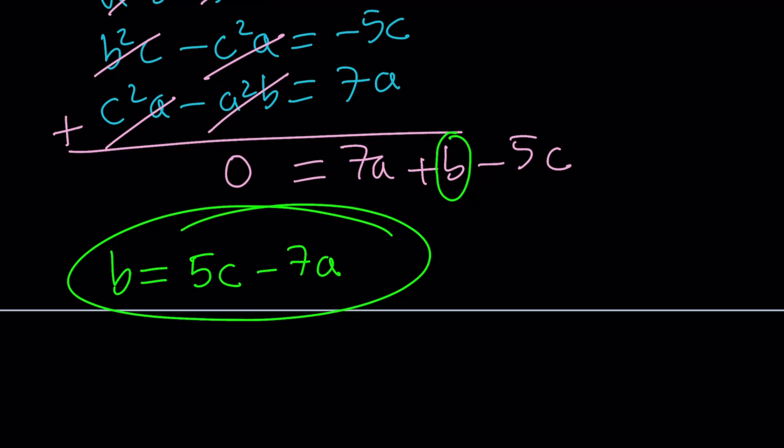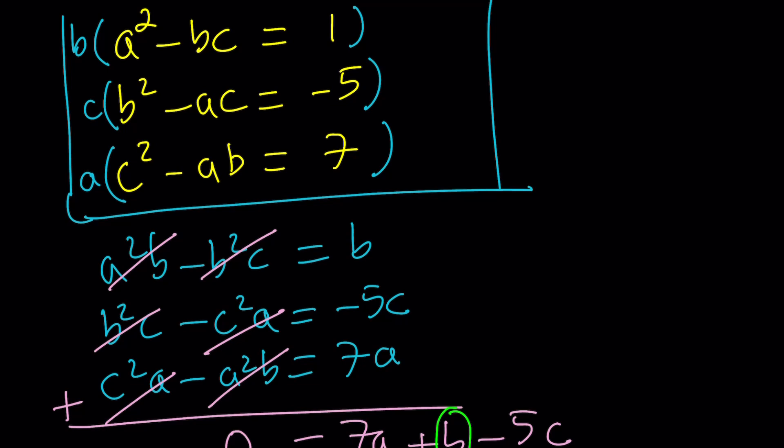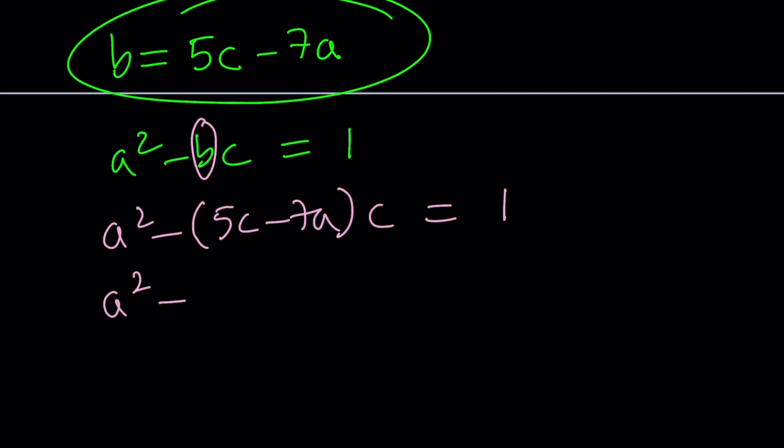This is important. We're going to keep using it. Now, let's go ahead and consider the first equation before the multiplication by variables. We know that a squared minus bc is equal to 1. So let's go ahead and replace b with what it is. So a squared minus 5c minus 7a multiply by c equals 1. We're going to simplify this. Distribute a squared minus 5c squared. You're multiplying from the right. And then, that's going to be a plus sign plus 7ac equals 1. This is an important equation. So let's go ahead and box that as well.